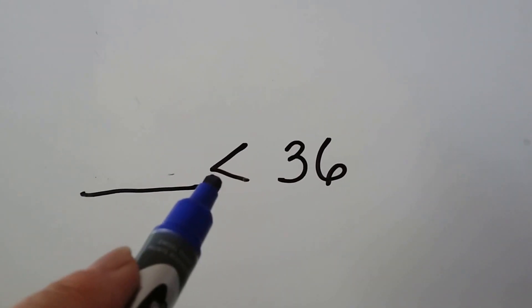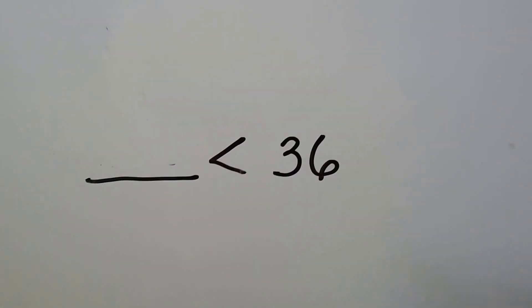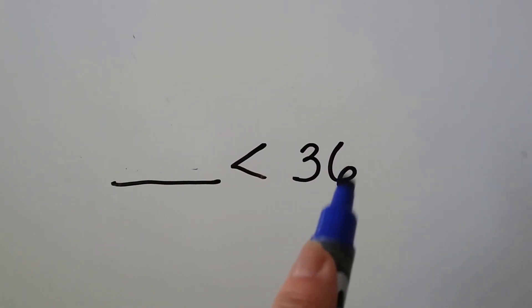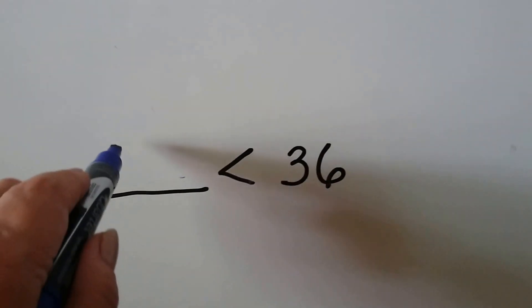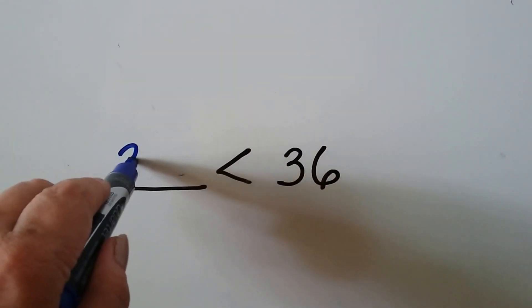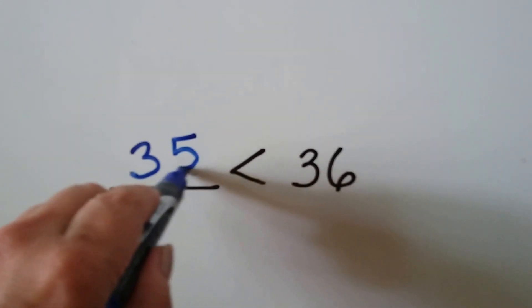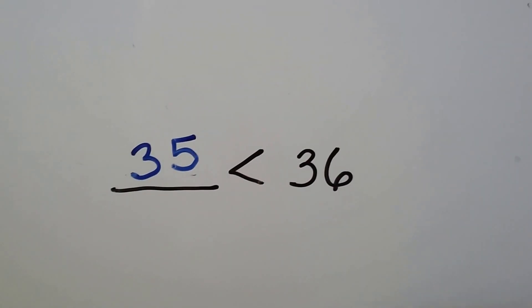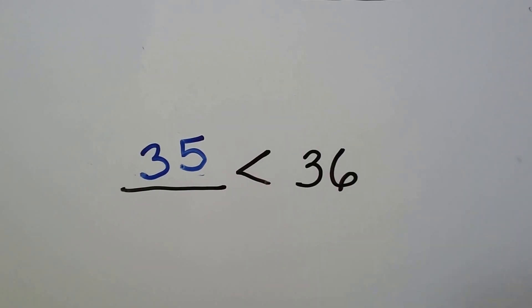Some number is less than 36. If it has three tens, it must have less than six ones. We could do three tens and five ones — that's less than 36 because it's got one less one.